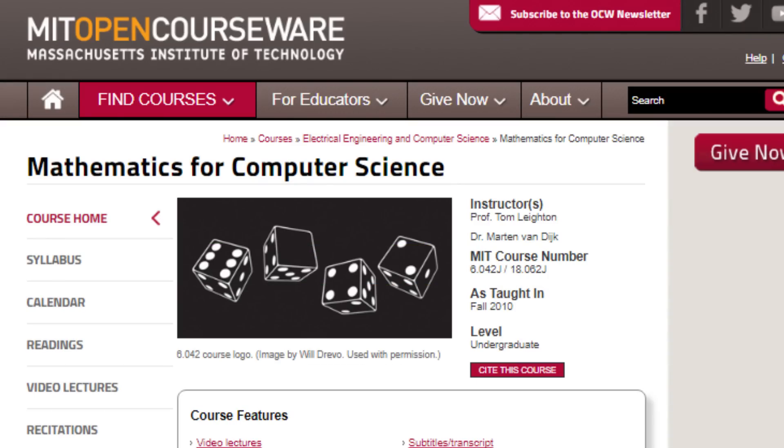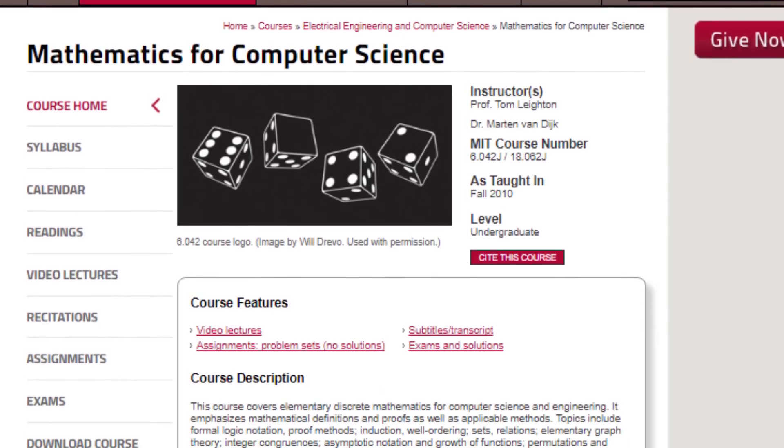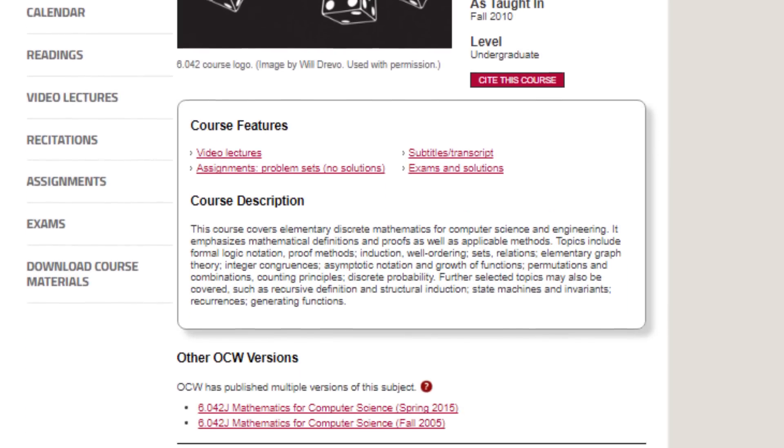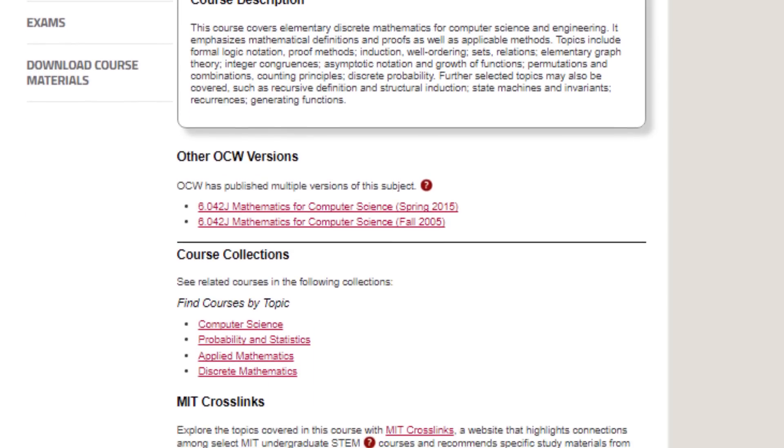Computer science is full of math, discrete math, probability theory, number theory. These are used in general programming. When it comes to the math of computer science specifically, MIT OpenCourseWare has a great course on this. Videos, assignments, and solutions all in one. Check it out.